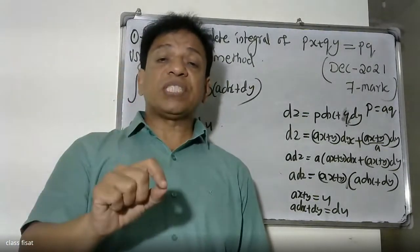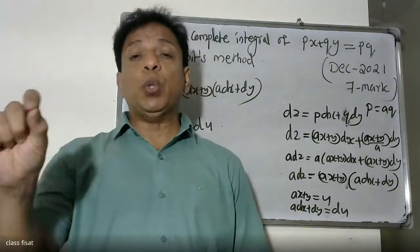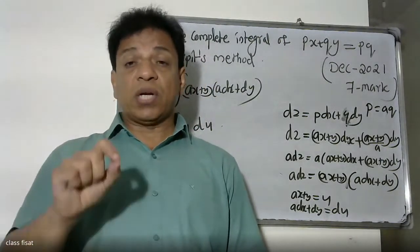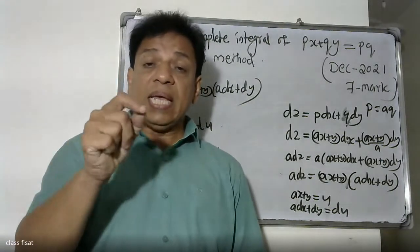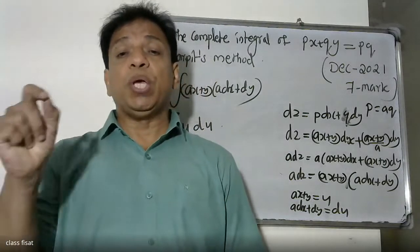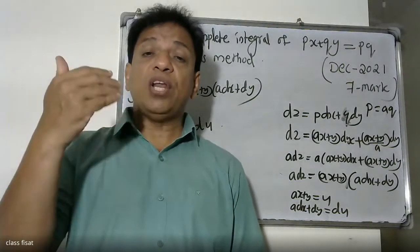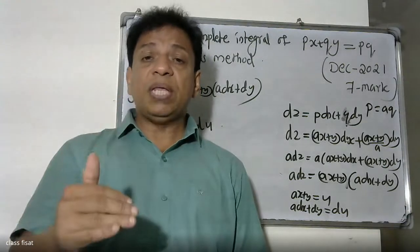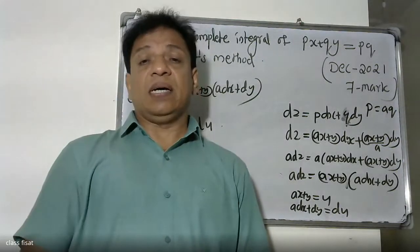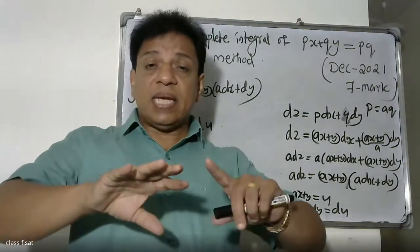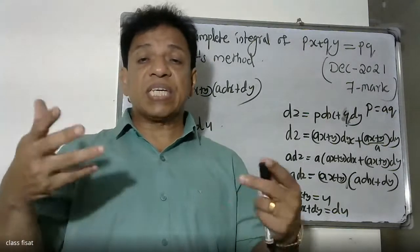The total differential of z is dz equals p dx plus q dy. After substituting the values of p and q and integrating, we obtain the complete integral. The administration is integrated and rearranged to give the final solution.